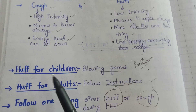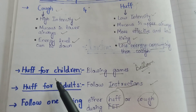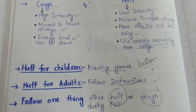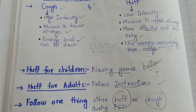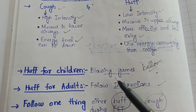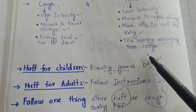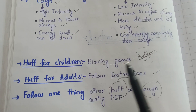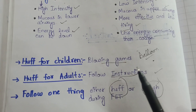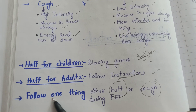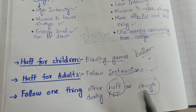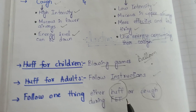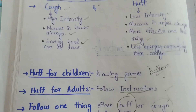In children, since they cannot follow instructions, we ask them to blow balloons or play blowing games so that huff can be performed. In adults, huff is done directly because adults can follow instructions. Also, remember to follow only one technique — either huff or cuff — during forced expiration technique, as both cannot be combined.